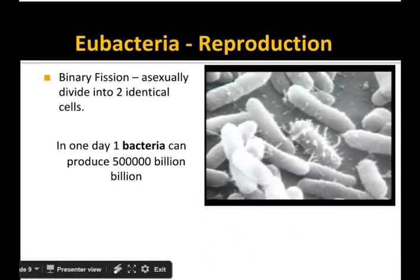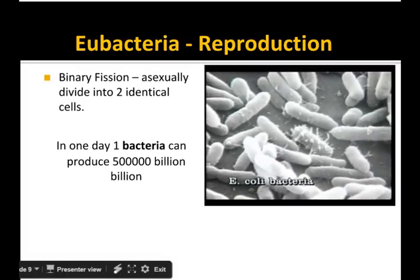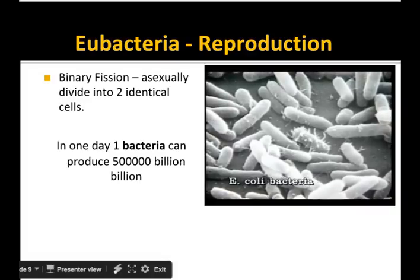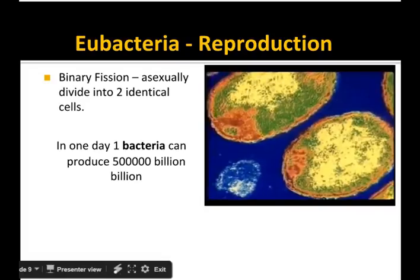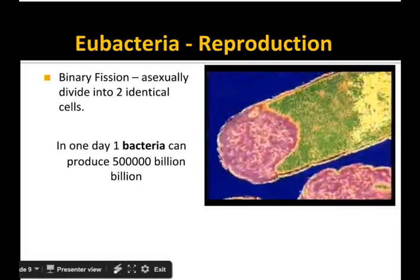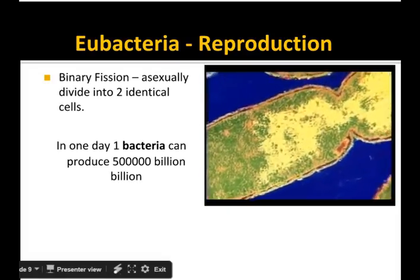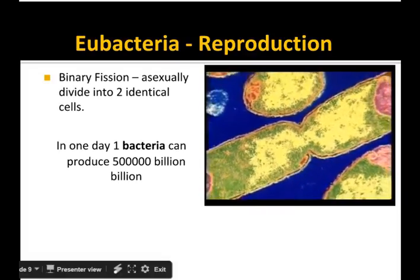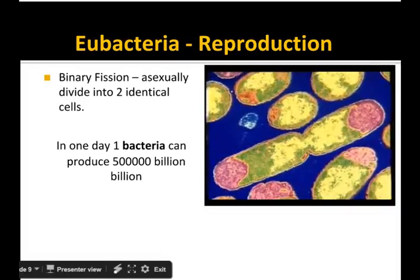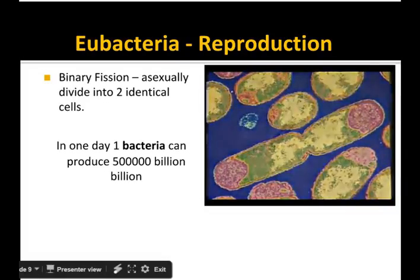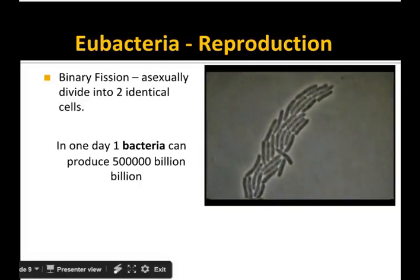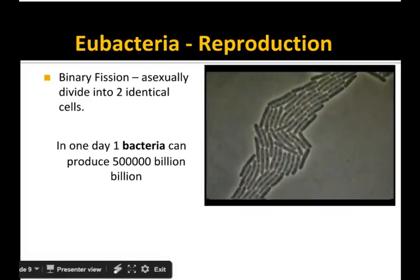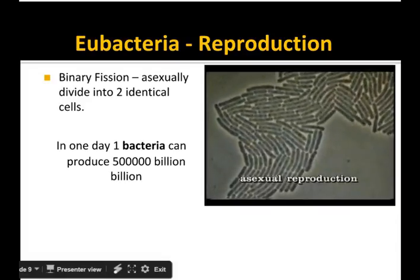Some living things remain a single cell throughout their lives — for example, E. coli bacteria. Millions of these microscopic creatures inhabit our intestines. Bacteria are very simple creatures. Unlike most cells, a bacterium doesn't even have a nucleus. But when it comes to reproducing, bacteria are marvels of efficiency. When a bacterium reproduces, it pinches in the middle, and then the cell divides in two. Each of the two new cells is exactly like the original one. Bacteria can reproduce very rapidly — some types divide once every 20 minutes. At this rate, a single bacterium can become over a billion bacteria in less than 12 hours. This kind of reproduction is called asexual reproduction because only one parent is needed to reproduce.